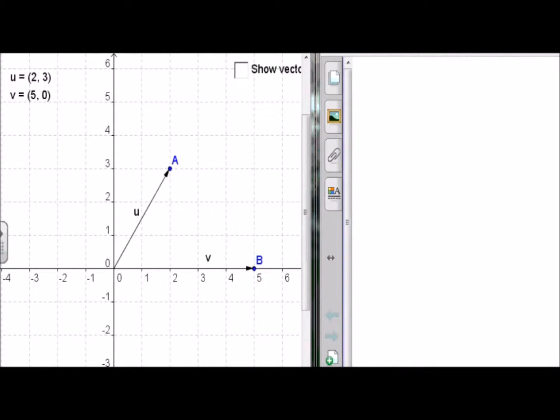In this video we'll look at the vector projection of one vector onto another. In this window we have vector u, which is the vector (2,3). Notice in this program I use round brackets. We write vectors with square brackets. So vector u, we want to project that onto vector v, which is the vector (5,0).